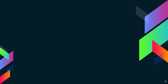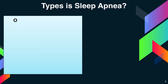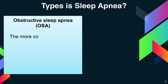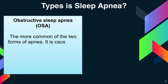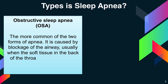Now, what are the types of sleep apnea? There are mainly two types. The first one is obstructive sleep apnea, OSA — the more common of the two forms. It is caused by blockage of the airway, usually when the soft tissue in the back of the throat collapses during sleep.